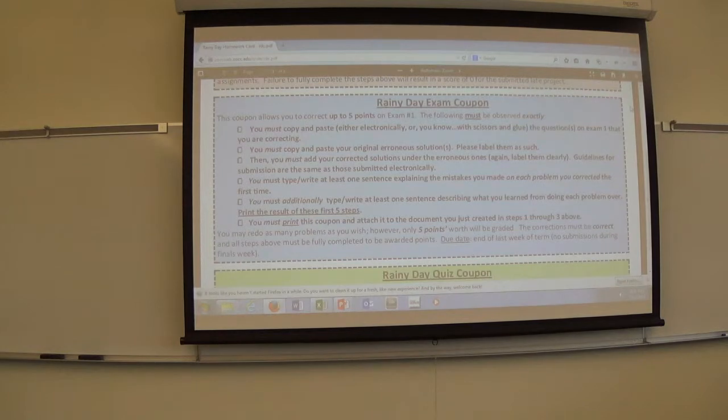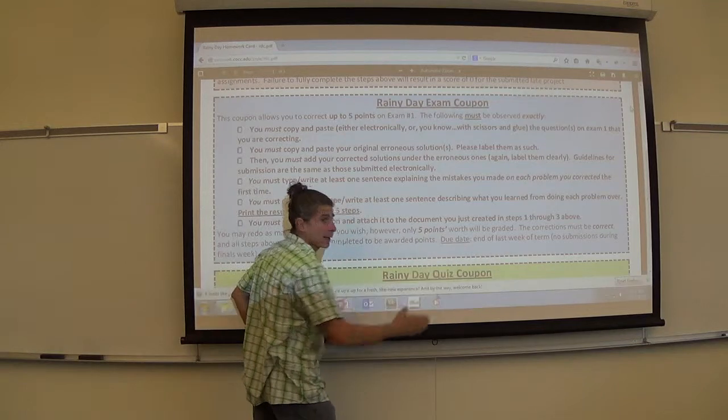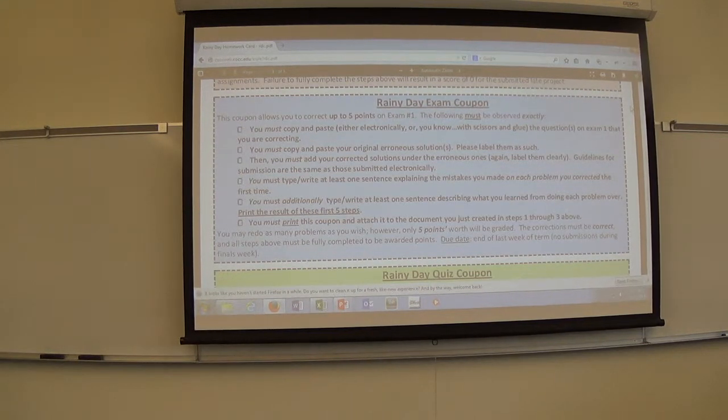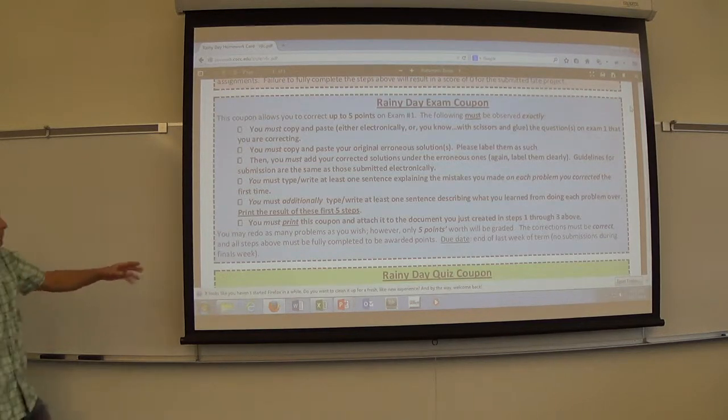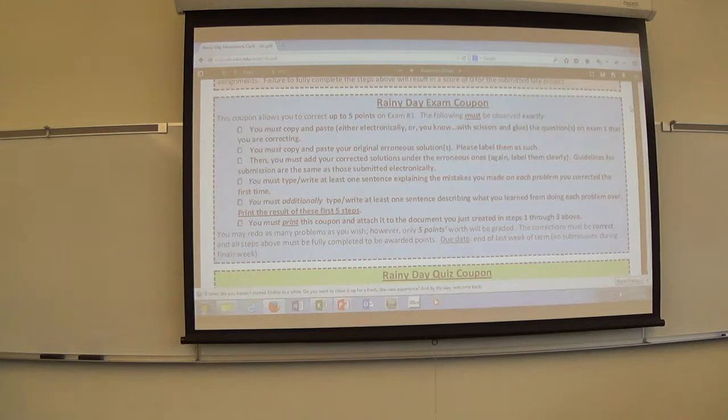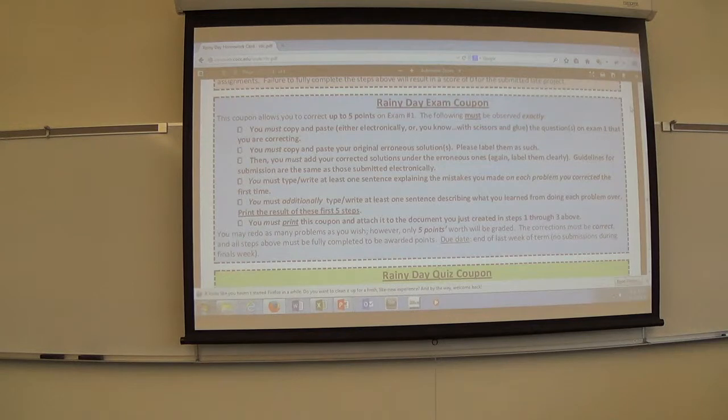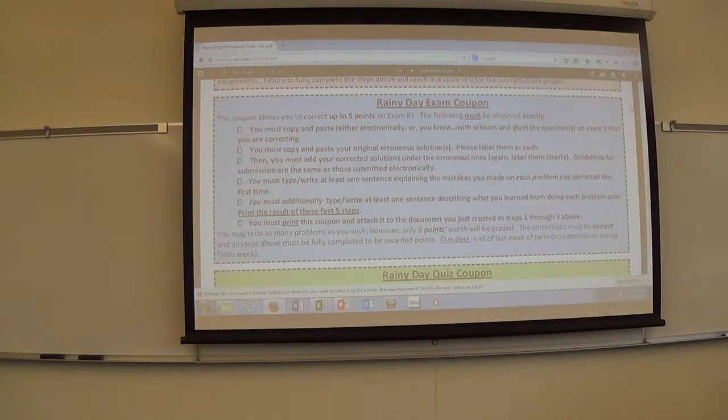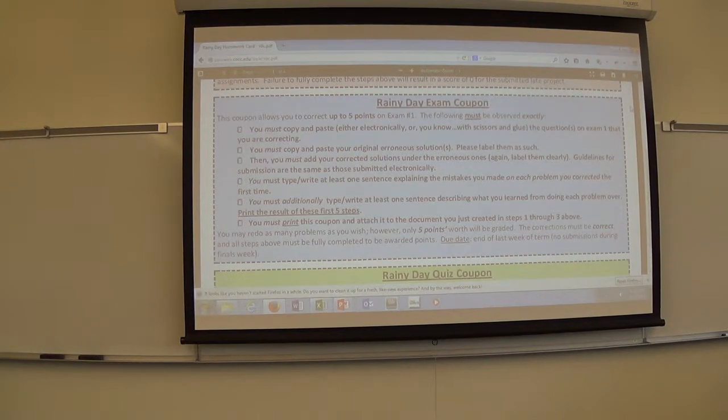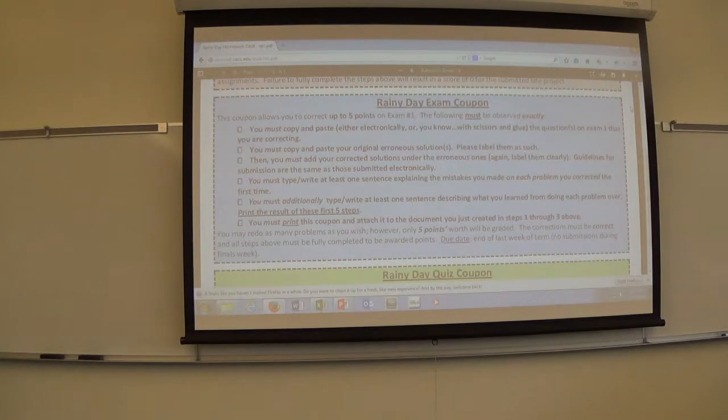This allows you to go back into your exam and make up five points on the exam. So if you lost some points, you can make up back to five of them by doing what's on this coupon. You have to print stuff, including the coupon, and you just have to submit it. There's no time limit on this one. I put a due date as the end of the last week of the term. So you've got five weeks to get this done and turn it in. I think it's better to do it earlier than later while it's fresh in your mind. The corrections must be correct. I had to add that because the first year I did it, I didn't have that on there.